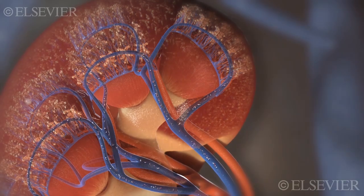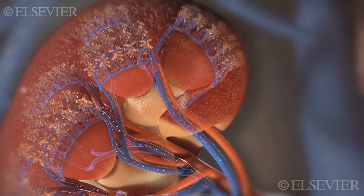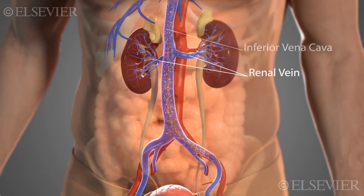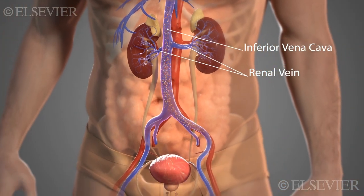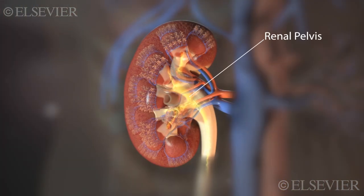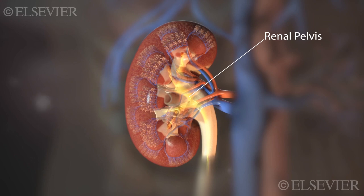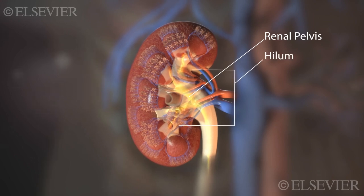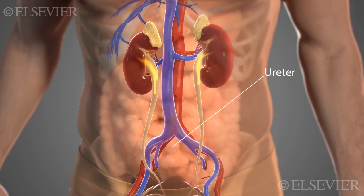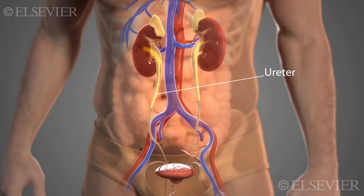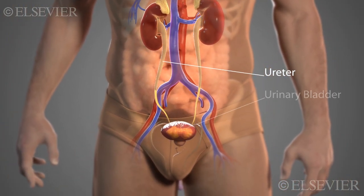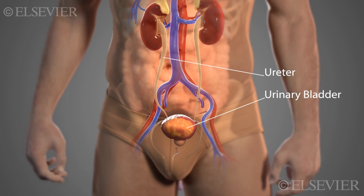The peritubular capillaries merge into veins that ultimately drain into the renal vein. The renal vein exits the kidney to drain into the inferior vena cava. The renal pelvis of the kidney narrows as it exits the hilum, which is the indentation of the kidney, to become the ureter. Urine travels down the ureters, which are about 10 to 12 inches long, and into the urinary bladder.